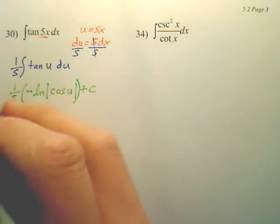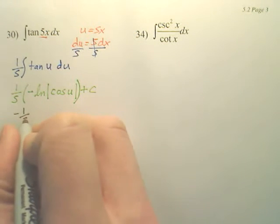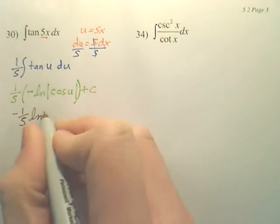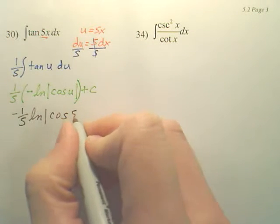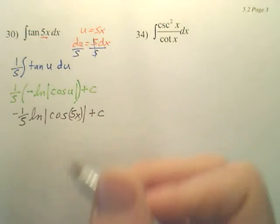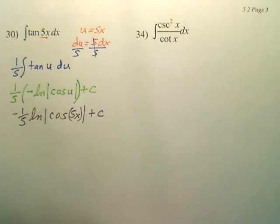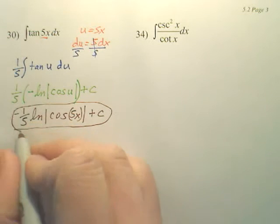And from there, you get negative 1/5 ln cosine, and u is 5x plus c. That would be your answer to the integral.